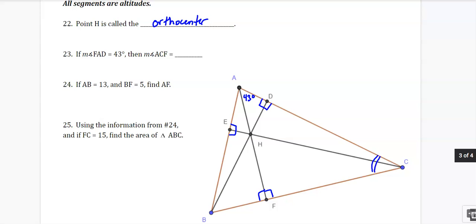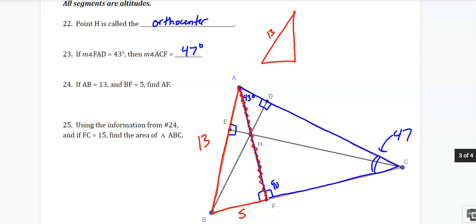ACF is this big angle down here. So if we focus on this big triangle, we have a 90, a 43, which is going to make that dude 47. So 47 degrees. If AB is 13 and BF is 5, find AF. AF is this leg right here. So if I look at that little right triangle, we know the hypotenuse, we know the leg, and we're missing AF over here. So leg squared plus leg squared, hypotenuse squared. I know this is a Pythagorean triple. I already know that AF is going to come out to be 12.